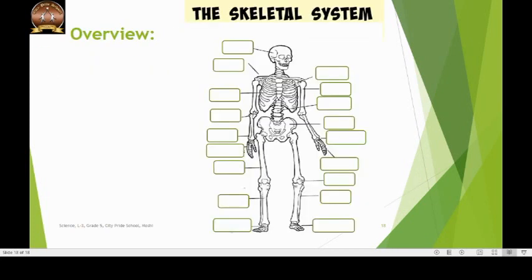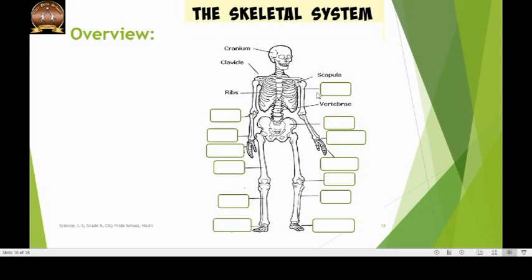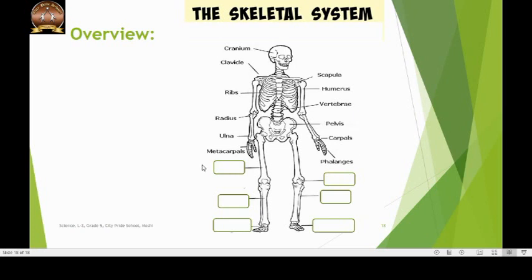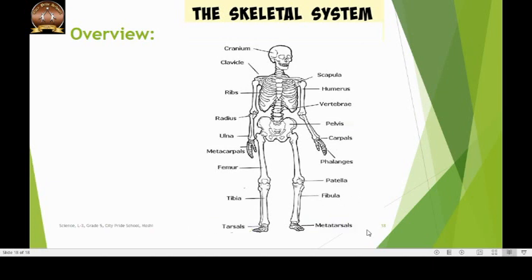Now let us review the names of the bones we have just learnt. This is the cranium, the ribs, the vertebrae, the clavicle or the collar bone, the scapula or the shoulder blade, the humerus, the radius, the ulna, the carpals, the metacarpals, the phalanges, the pelvis, the femur, the patella, the tibia, the fibula, the tarsals and metatarsals. Were you able to complete this exercise? If not, go back and review.